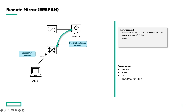The remote mirror, also called ERSPAN. With the remote mirror, it is possible to mirror traffic to an analyzer that is not directly connected to the switch. We can mirror traffic from the source interface 1/1/1 to an analyzer that is connected behind a different switch. The traffic will be encapsulated using GRE.